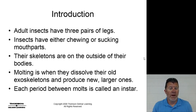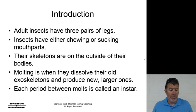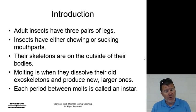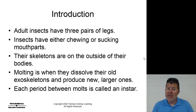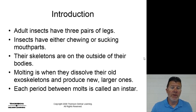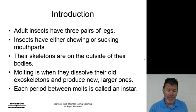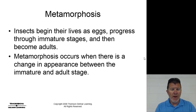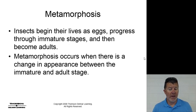These insects have skeletons on the outside of their bodies. Molting is when they dissolve their old exoskeletons and produce new, bigger ones. Each period between the molt is called an instar — and there's actually even a pesticide called Instar that would be used during this time.